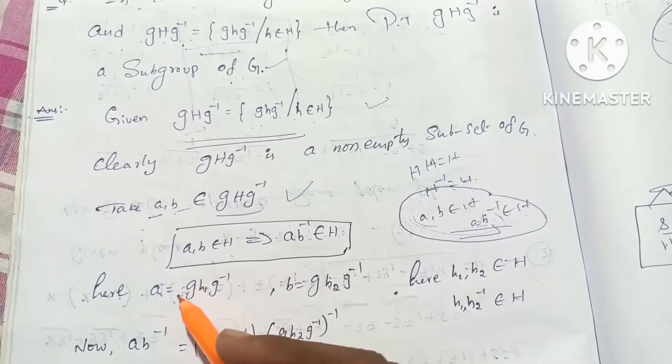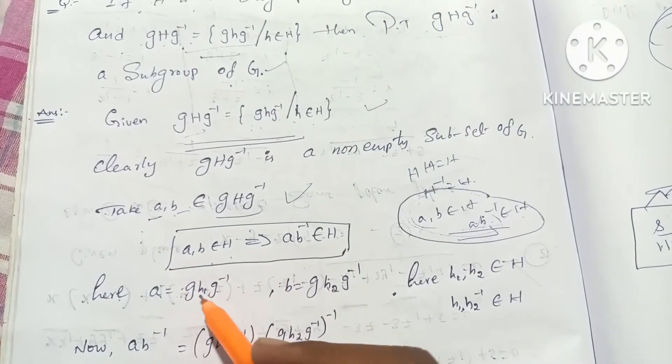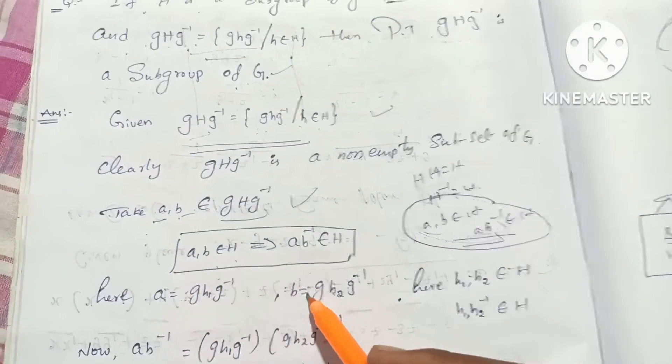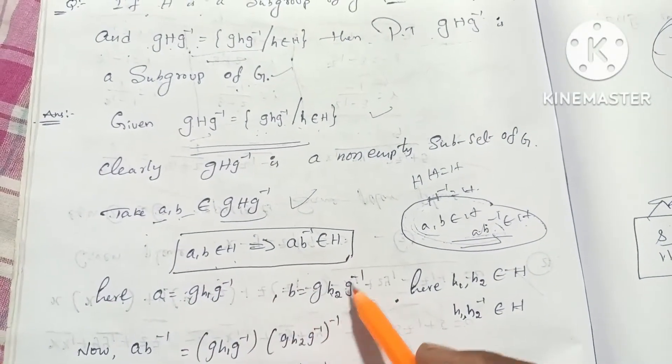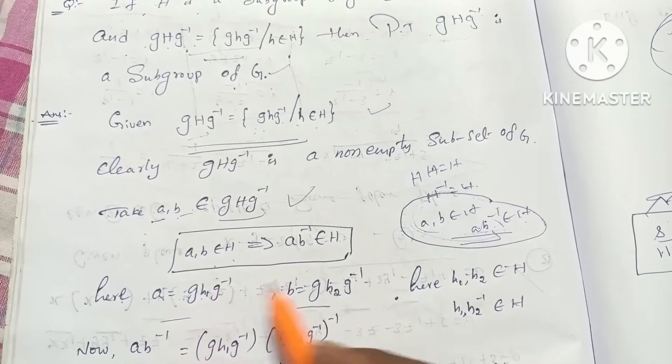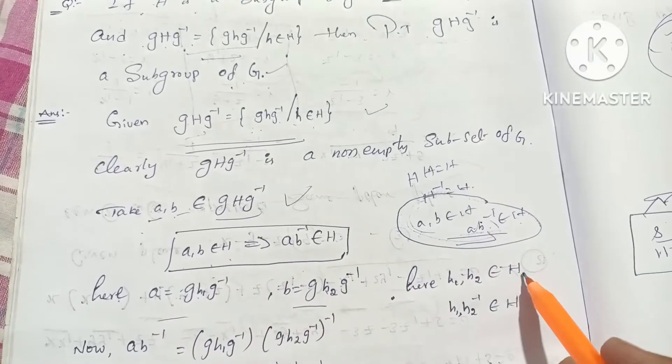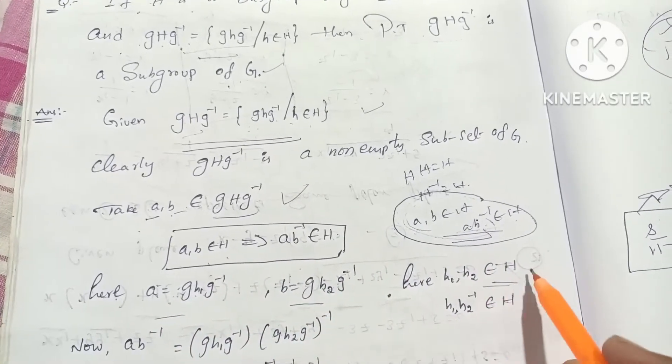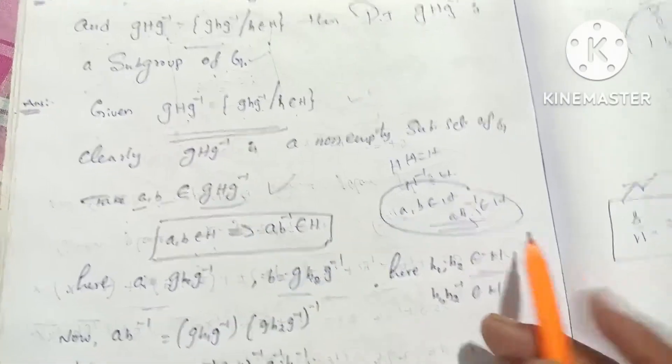We will prove: A value equals g·H₁·g⁻¹, and B value equals g·H₂·g⁻¹. Here, H₁ and H₂ belong to H, the subgroup. So the two elements are connected to H.